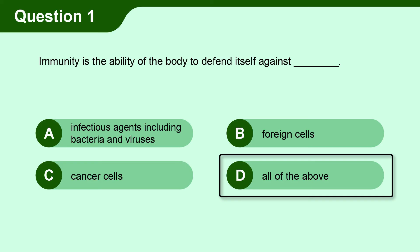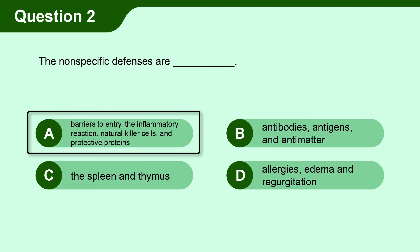Question 1. Immunity is the ability of the body to defend itself against D. All of the above. Question 2. The non-specific defenses are A. barriers to entry, the inflammatory reaction, natural killer cells, and protective proteins.